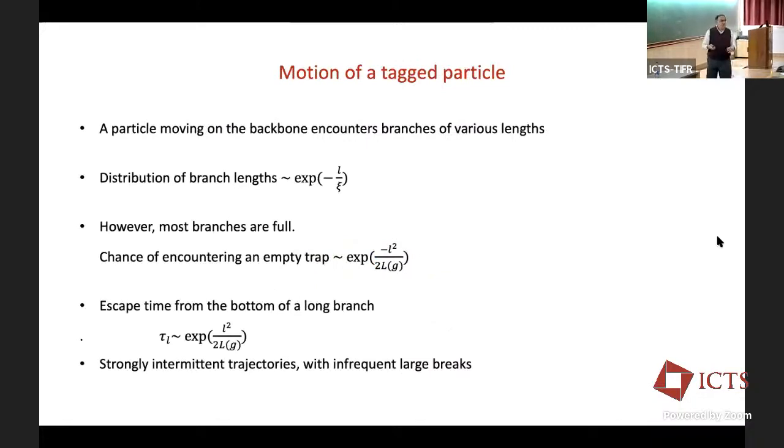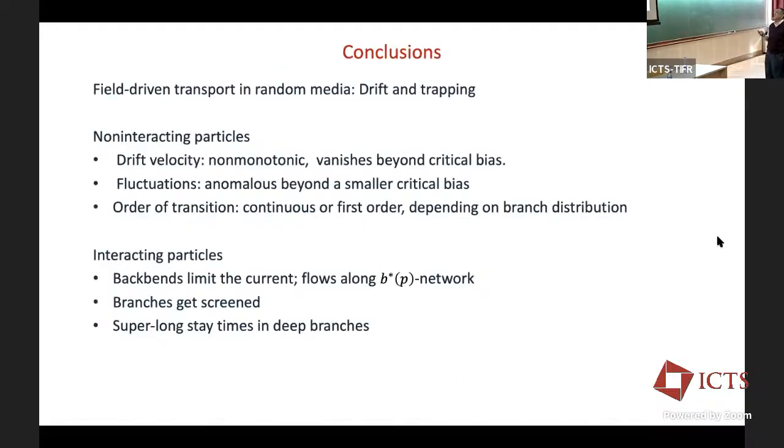In a branch, since the current is zero, it's very easy to find the exact steady state. You can find the full density profile shown in blue. The density has reached one after some time. There's a certain length λ. Once in a while, that branch will empty out. If it empties out, the particle will nicely go in, but having gone in, it will take forever to get out because not only is it activation, but all the others have to activate out before it can go. This time is e raised to L squared over Lg. We expect strongly intermittent trajectories with infrequent but very large breaks.